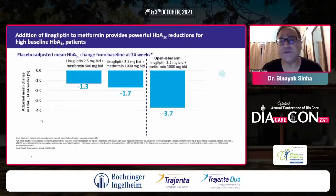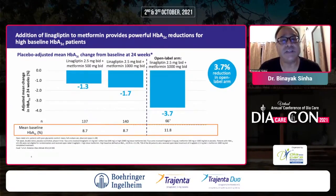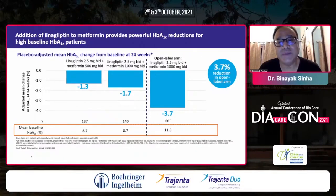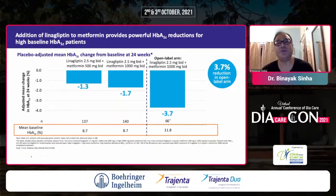In addition with metformin, there is a reduction of about 1.3% to 1.7% depending on the dose of metformin, with an HbA1c of 8.7%. In an open-label study, you see a reduction of about 4% — very typical of any anti-diabetic drug because the higher you go, the greater is the fall. There is a 4% reduction with linagliptin-metformin if HbA1c is around 12%.